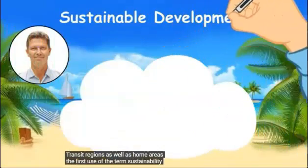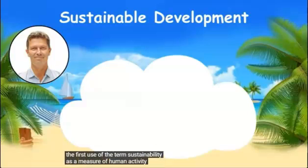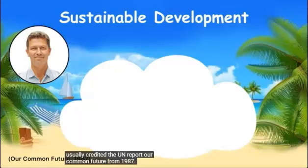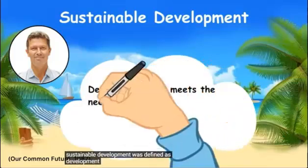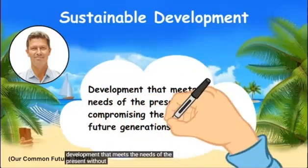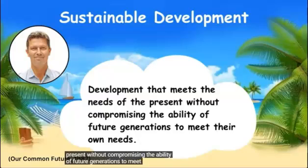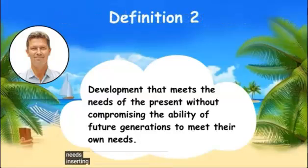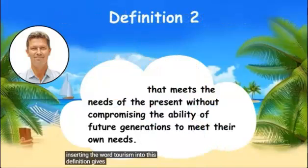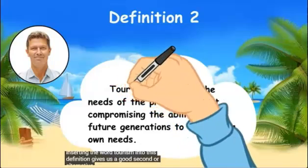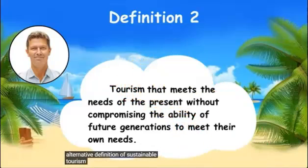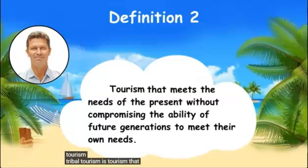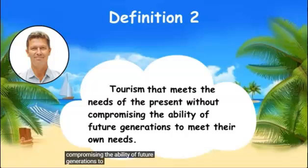The first use of the term sustainability as a measure of human activity is usually credited to the UN report Our Common Future from 1987. In this report, sustainable development was defined as development that meets the needs of the present without compromising the ability of future generations to meet their own needs. Inserting the word tourism into this definition gives us a good second definition of sustainable tourism: tourism that meets the needs of the present without compromising the ability of future generations to meet their own needs.